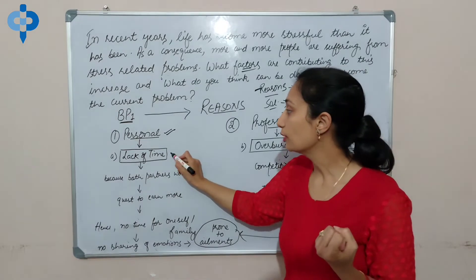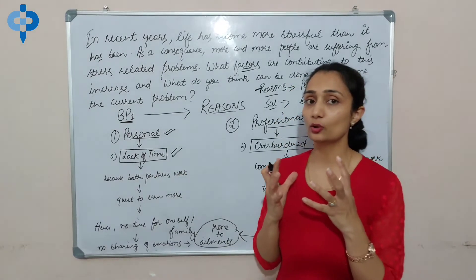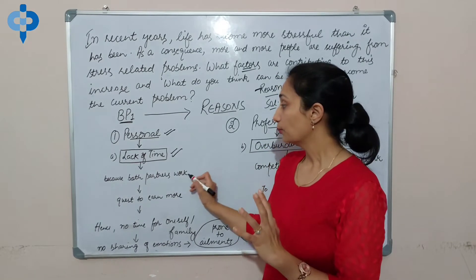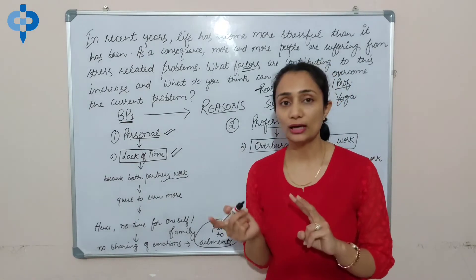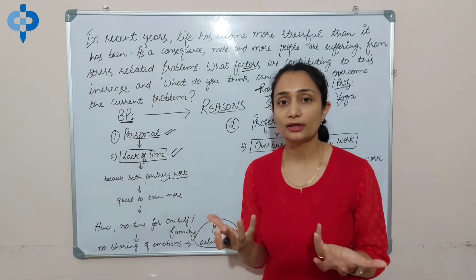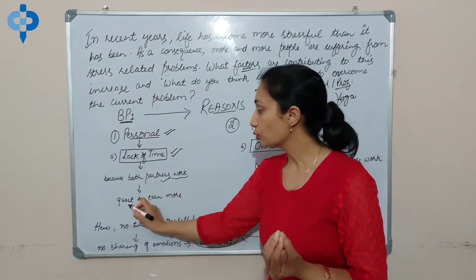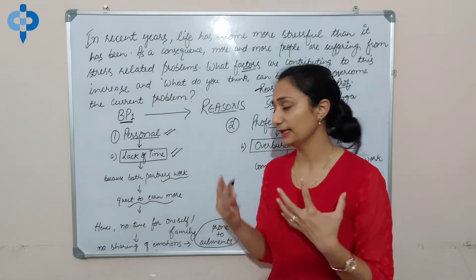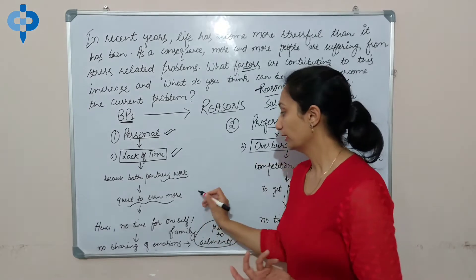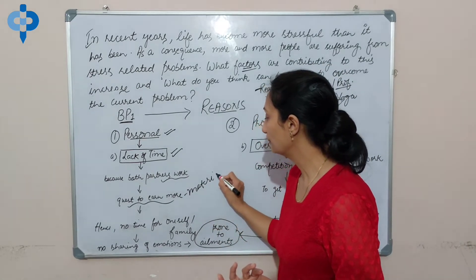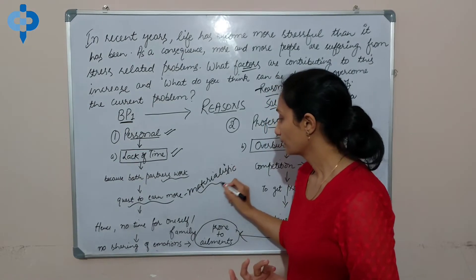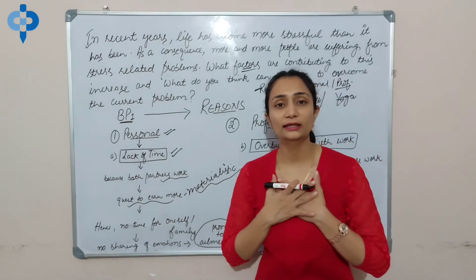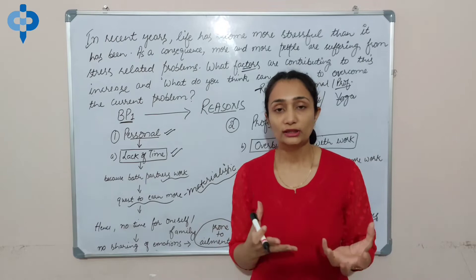The supporting idea is lack of time. In personal life, why are people getting stressed? Because they have very little time — lack of time. Why? Because both partners work. If there is a couple, both are working, or even a single person is working hard. Why? Because they have an urge — I'm using a synonym — they have a quest, a desire, to earn more and more money. They have become materialistic. Hence, no time for oneself or family — no time for family, no time for children.